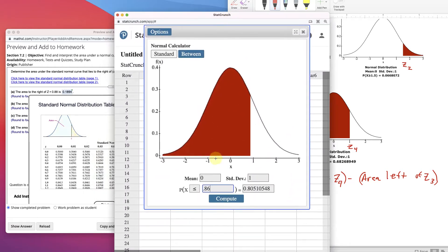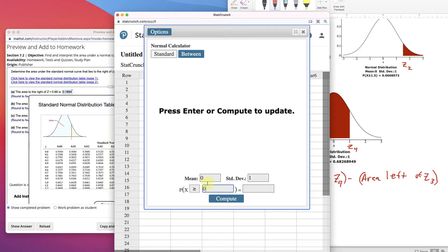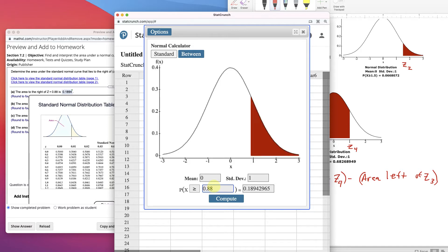If we go up and get StatCrunch though, mean 0, standard deviation 1, to the right of 0.88. 1.894. Super fast, showing the probability to the right of that.